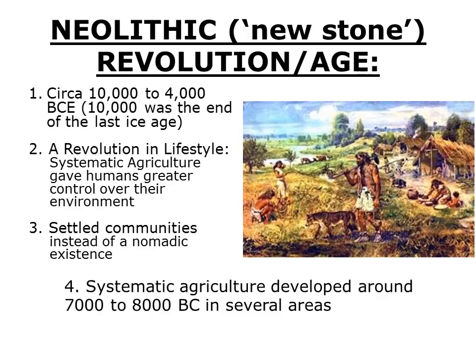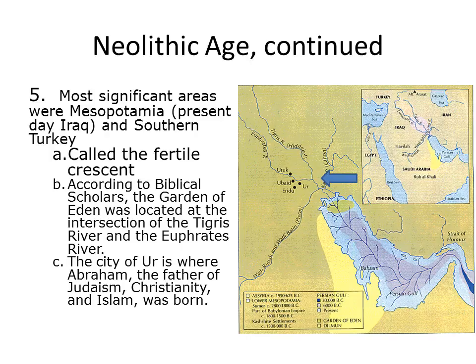This allowed them to create settled communities, so they weren't constantly on the move anymore. This became especially important around 7,000 to 8,000 BCE in several areas. The most significant area was Mesopotamia — present-day Iraq and southern Turkey — called the Fertile Crescent. According to Biblical scholars, the Garden of Eden was located at the intersection of the Tigris and the Euphrates Rivers, which is really where civilization essentially started.